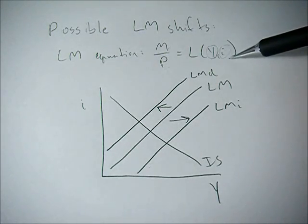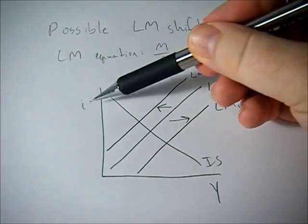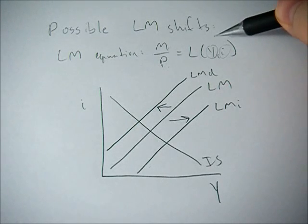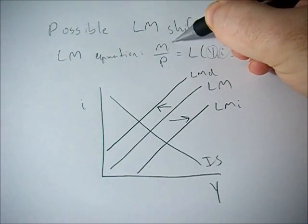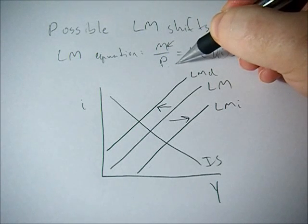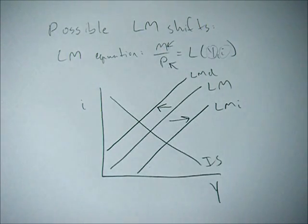So Y and I changing is already endogenous in the model, so we don't have to worry about this side. What will shift the LM curve is a change in this money supply or a change in the price level.